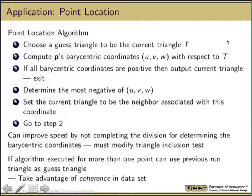Here's the point location algorithm that's written out. Choose a random triangle. Guess somehow. Compute P's barycentric coordinates with respect to that triangle. If all the coordinates are positive, then output the current triangle because we found it. Determine the most negative of U, V, and W. Of the three which has the biggest negative sign. Set the current triangle to be the neighbor associated with that coordinate and go to step two. This step here of set the triangle to be the neighbor associated with this coordinate is the most tricky.